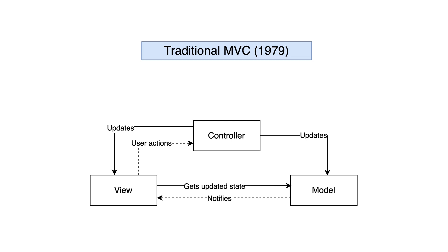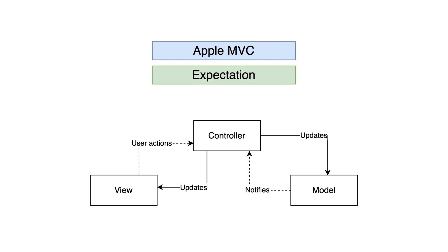Implementing the traditional MVC pattern in an iOS app poses architectural challenges. The tight coupling among the model, view, and controller entities creates interdependencies, introducing complexities and limiting flexibility in your app's architecture.